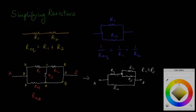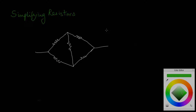R2 parallel to R3 very obviously from the picture, which is in series with R1, and then this whole combination is parallel with R4. We can just use these basic rules to simplify this circuit and very easily find the effective resistance of this combination. One special case I would like to talk about is the Wheatstone bridge.